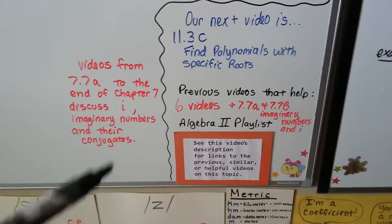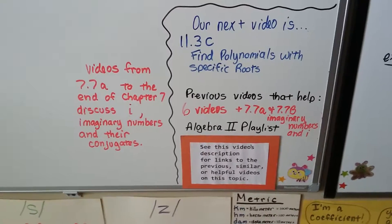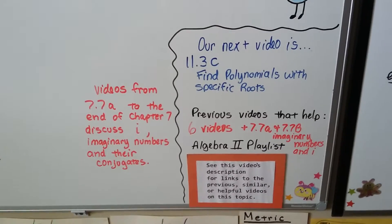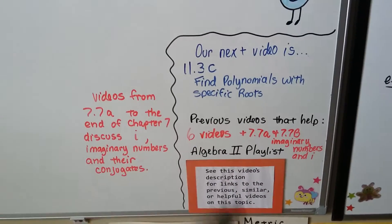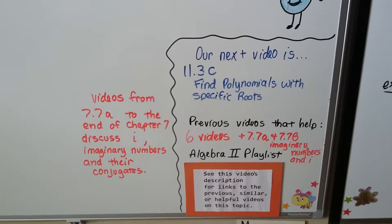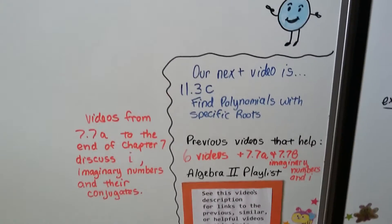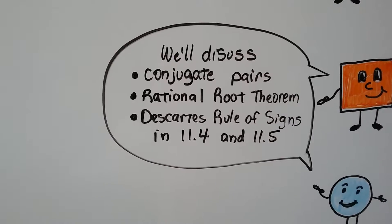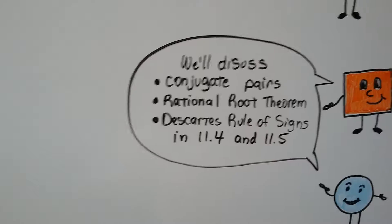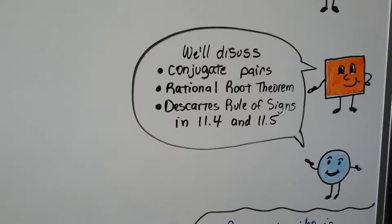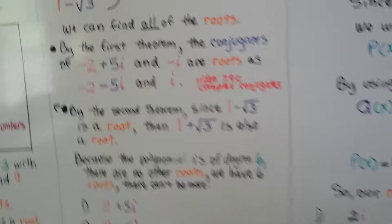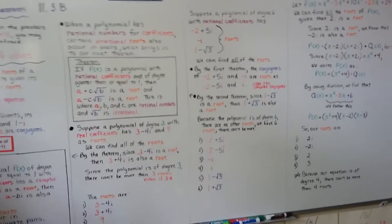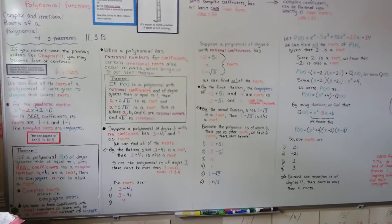The previous videos will be in this description, the 6 previous videos for chapter 11, and a link to these chapter 7 videos. Our next video is 11.3c. We're going to find polynomials with specific roots. If you're looking for conjugate pairs in the rational root theorem and Descartes' rule of signs, we're going to cover those in 11.4 and 11.5. Be patient. Stay with me. We're going to get to those. I'm trying to move methodically and slowly here, adding a little bit of information for each video. And I hope you're doing well.